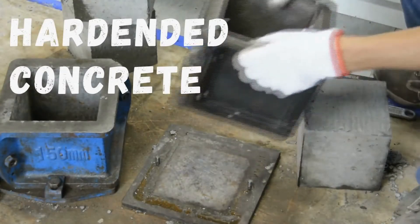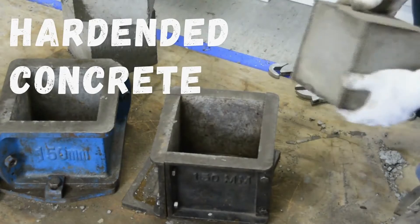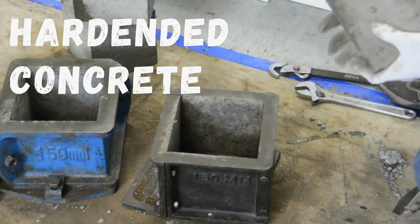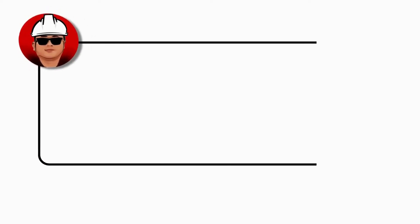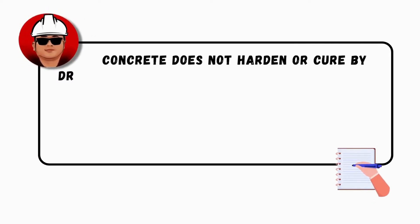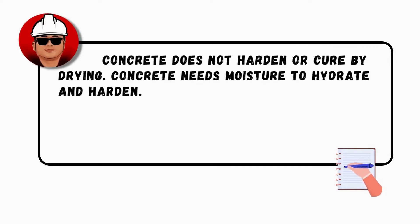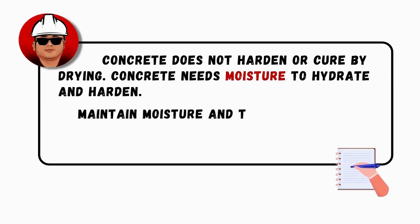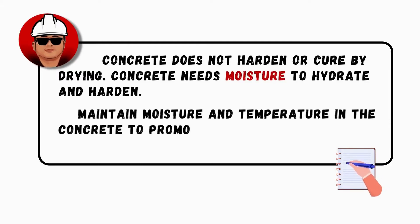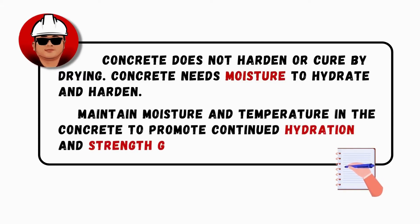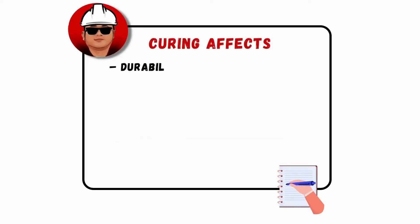Now let's move on to the second stage: Hardened Concrete. Concrete does not harden or cure by drying — concrete needs moisture to hydrate and harden. Maintain moisture and temperature in the concrete to promote continued hydration and strength gain. Curing affects the following properties.